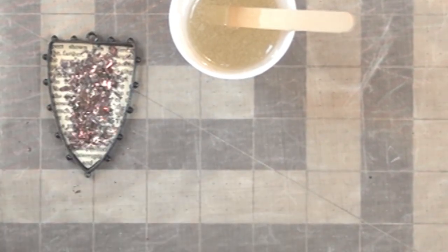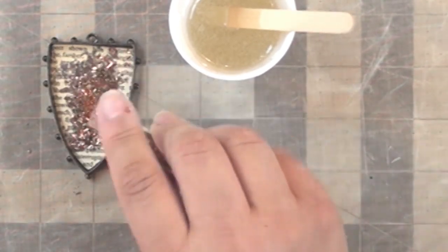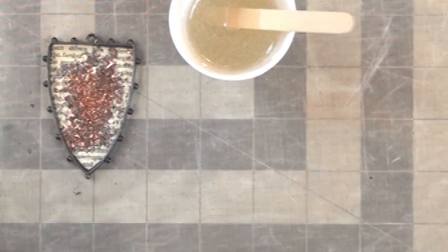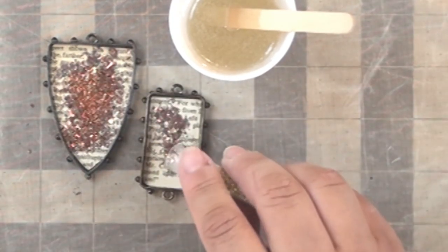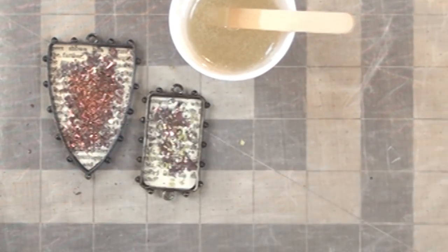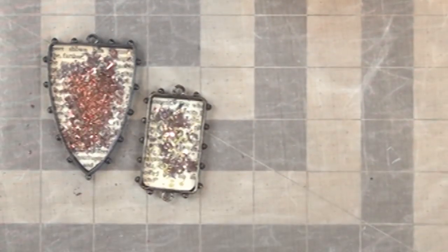So I'm using a product called Shattered Inclusions that's from Ice Resin as well, as well as some German glass glitter. This is a rust-colored glass glitter, and I have another bezel here. Usually when I pour one bezel, I'll pour multiples at a time.